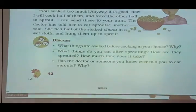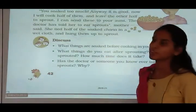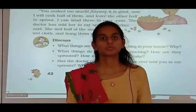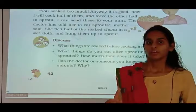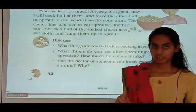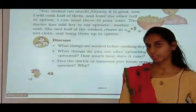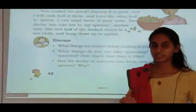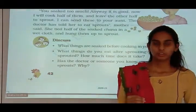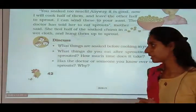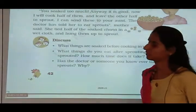What things do you eat after sprouting? How are they sprouted? How much time does it take? For sprouting, first we have to soak the things — soak means to wet. We wet the chana for 12 hours or overnight before cooking. Then we tie it in a wet cloth for some time and it sprouts. Usually it takes 12 hours.